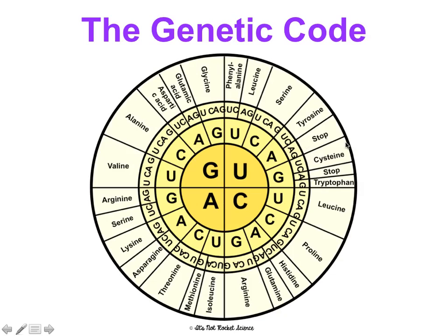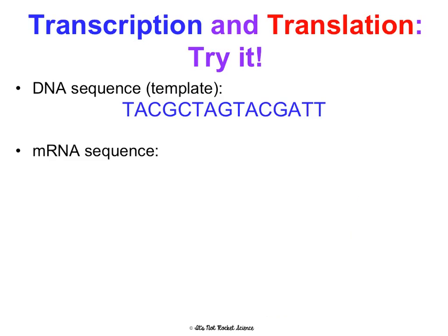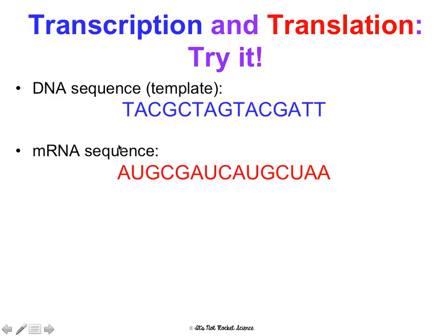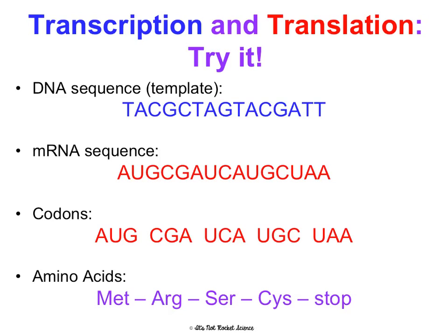Now we'll try transcription and translation as two steps together. Starting with a DNA sequence, first transcribe it to get the mRNA using complementary base pairing rules. Then split the mRNA into codons — groups of three — starting where you see AUG. Look up each codon on the genetic code: AUG gives methionine, CGA gives arginine, UCA gives serine, UGC gives cysteine, and UAA gives stop. If you do it right, you should always begin with methionine and end with stop.